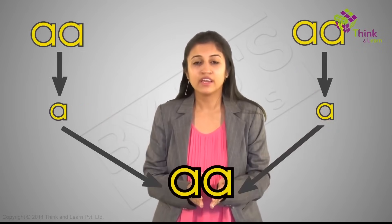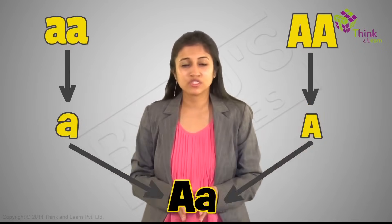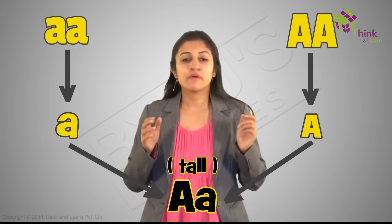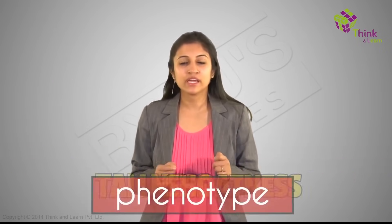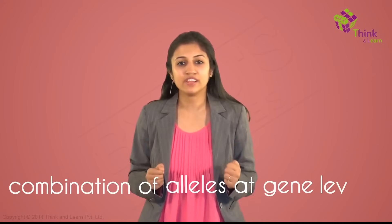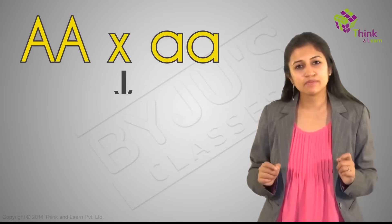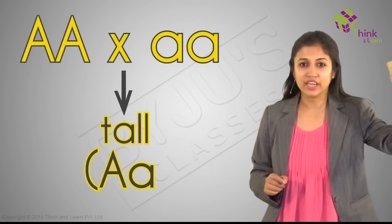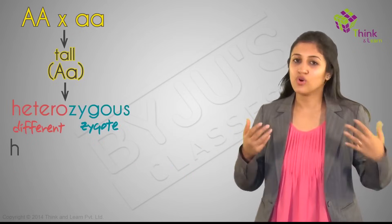In the case of AA breeding with AA, the sex cells respectively get A and A, so the offspring will be AA — tall. In the case of aa, the sex cells get a and a, and the varieties yielded will be stable and short. In Mendel's first hybrid experiment, the cross was between AA and aa — the pollen and egg carried A and a — so the cross was Aa, which was tall. In this case, tallness or shortness is the phenotype, and the combination of alleles — AA, Aa, or aa — is the genotype.